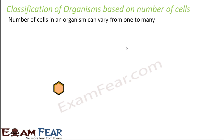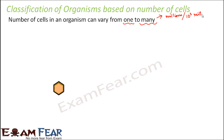If we look at different organisms, we see that the number of cells in an organism can vary from one to many, and when I say many, this can go to millions or billions or even trillions. A billion is nothing but 10 to the power 3 millions.